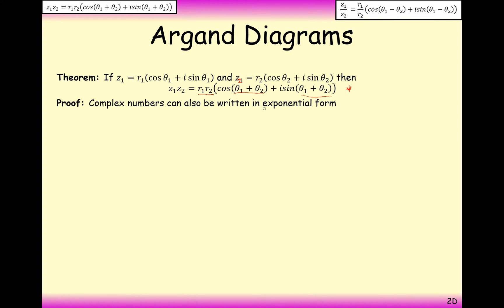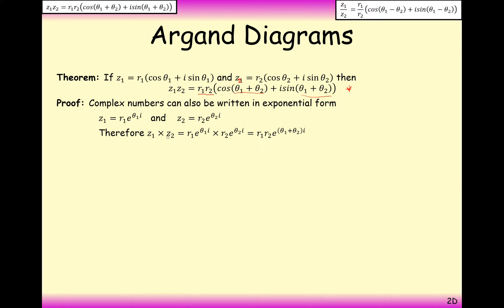The proof starts by converting the complex numbers into exponential form — a third form you'll see in the second year of further maths. So we write R1·e^(θ1·i) and R2·e^(θ2·i). E is just a base number representing the exponential value of e. The way we multiply these two complex numbers together is R1·e^(θ1·i) times R2·e^(θ2·i).